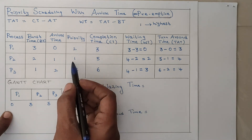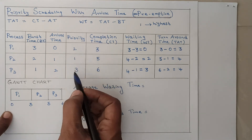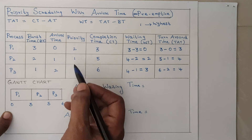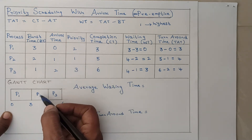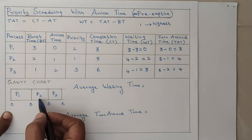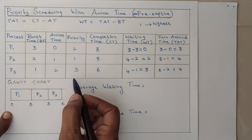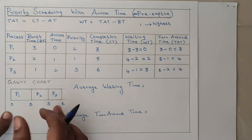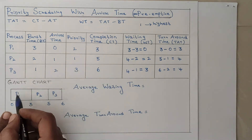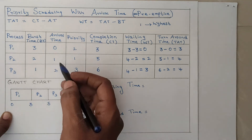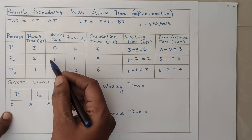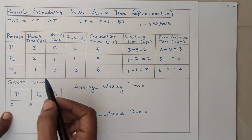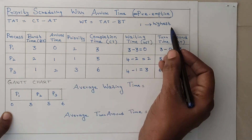Now we check the priority. The priority of P2 is 1 and the priority of P3 is 3. Comparing P2 and P3, P2 has the highest priority. That's why the next process is P2. If instead we considered 3 as the highest priority, the Gantt chart would change — after P1's 3ms, the CPU would give priority to P3. But since we are assuming 1 is the highest priority, P2 gets executed next.